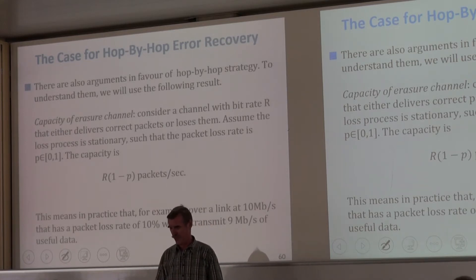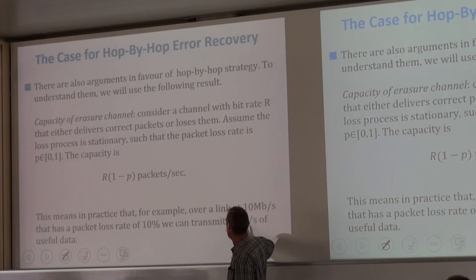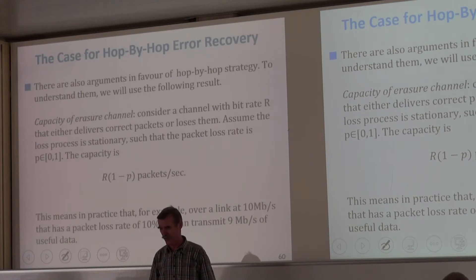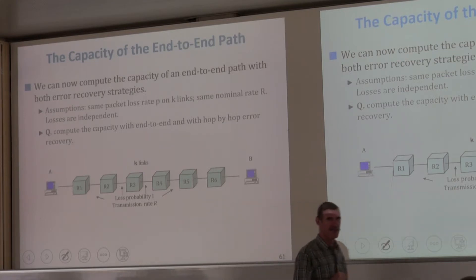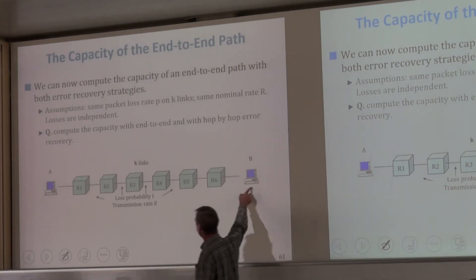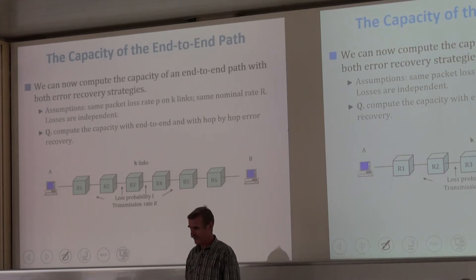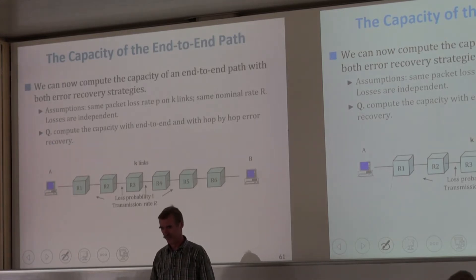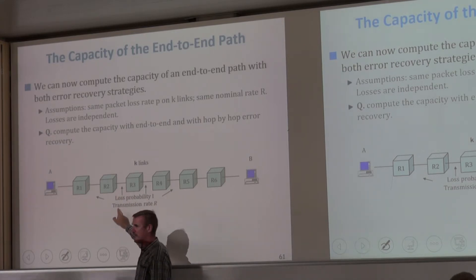In practice, if I have a link of 10 megabits per second and I lose 10% of the packets, I could code arbitrarily close to 9 megabits per second. Equipped with this information theory theorem, let's compute the end-to-end capacity when we do hop-by-hop or end-to-end error recovery. I'm assuming a simple scenario with K links that each drop packets with the same loss probability P and the same rate R packets per second.